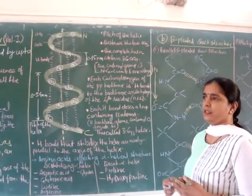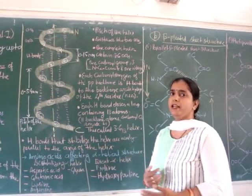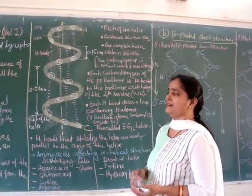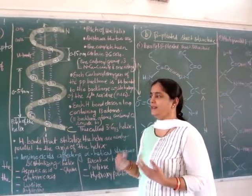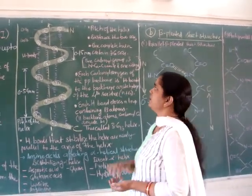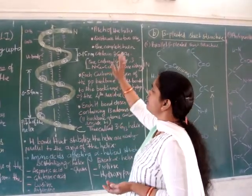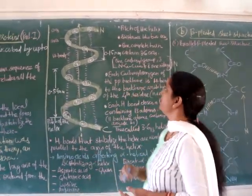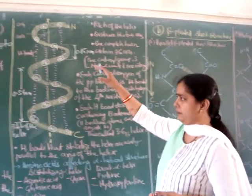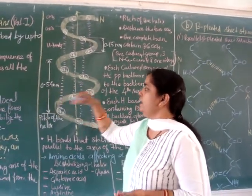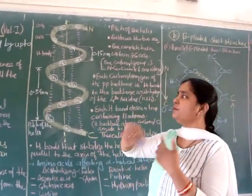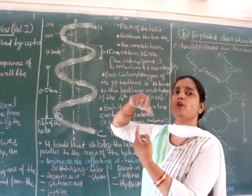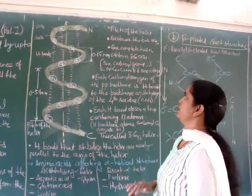Some important features of the alpha helical structure: first, the alpha helix can be either right-handed or left-handed. Second, the pitch of the helix is 0.54 nanometers, meaning a complete turn occurs every 0.54 nanometers.